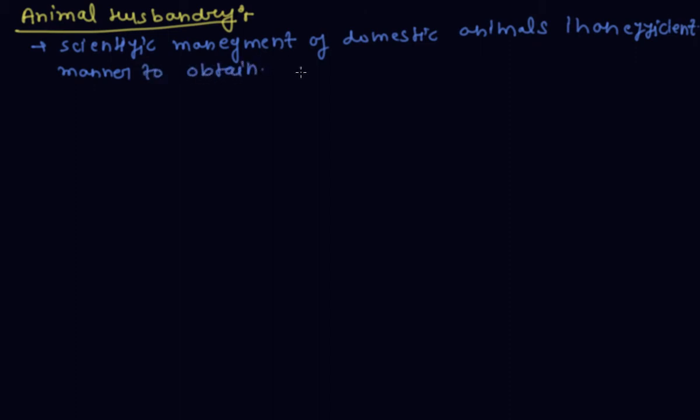Now discuss animal husbandry. Animal husbandry is the scientific management of domestic animals in an efficient manner to obtain food and other useful products.